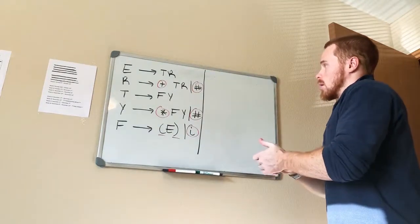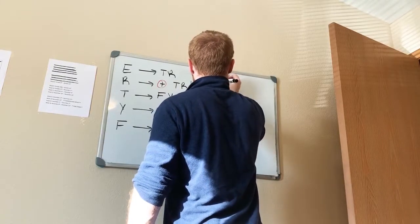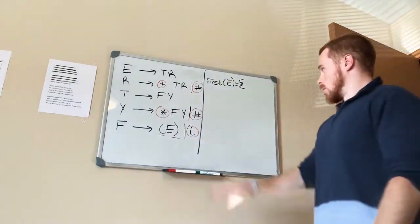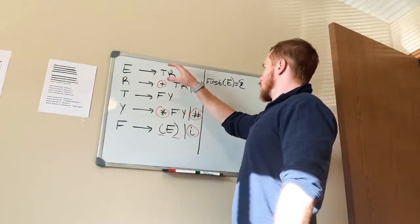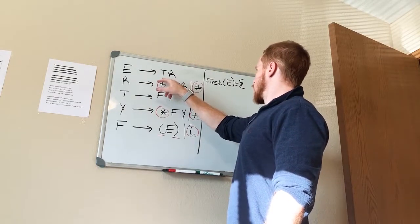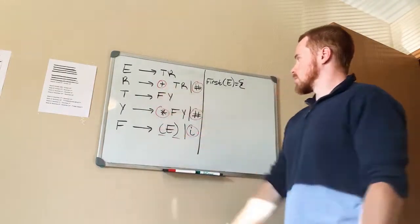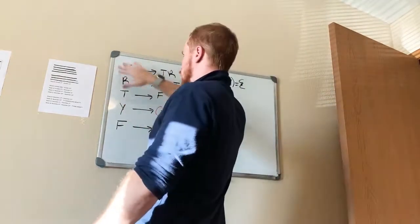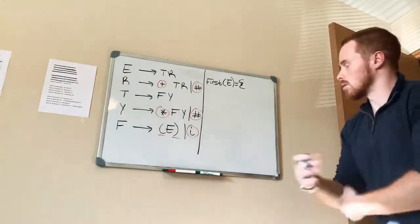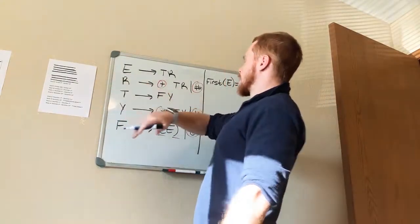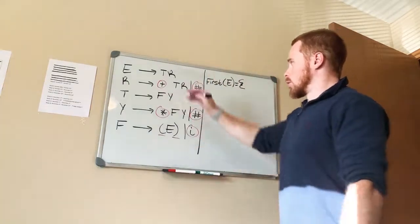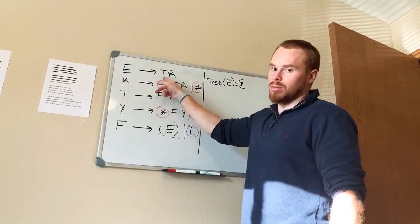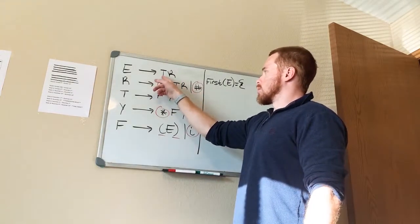Let's find First(E). To find the first set of E, follow the rule for E and keep going until you hit your first terminal symbol — one of the highlighted characters. Non-terminal symbols are generally the capital letters, all listed on the left side. So for First(E), go to the rule for E, which says T R. Since there's no terminal symbol to pick up right away, you calculate First(T). Go to T — again, no terminal symbol there.